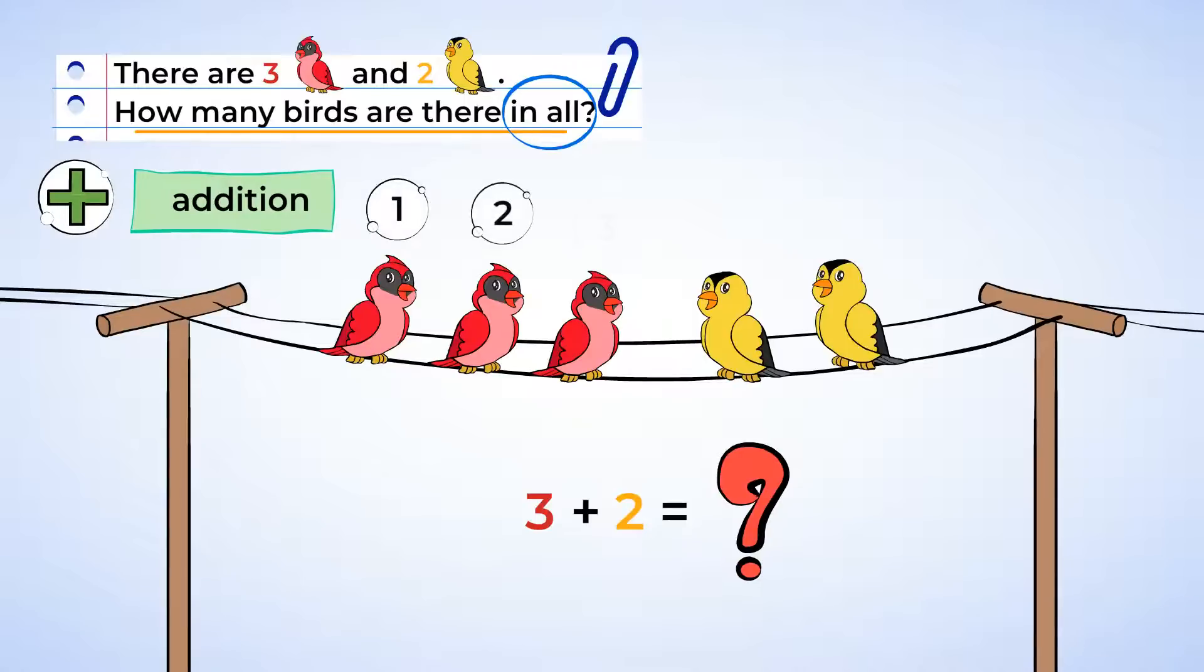One, two, three, four, five. There are five birds in all. Three plus two equals five.